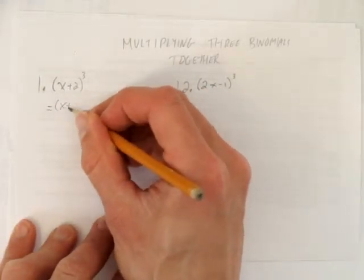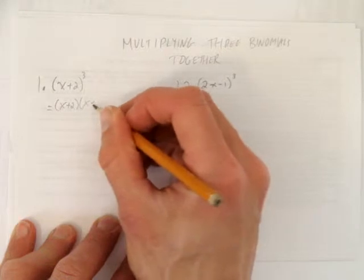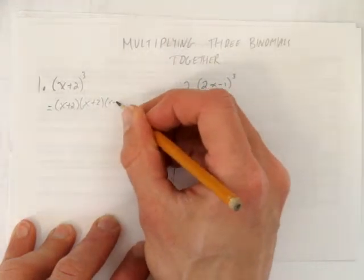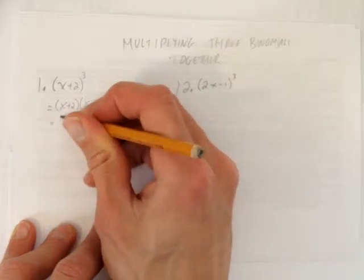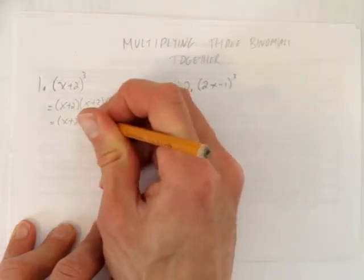We'll rewrite that as x plus 2 times x plus 2 times x plus 2. Now, you can pick any pair you want. I'm going to pick the last two to start with. I'll leave this first one x plus 2.